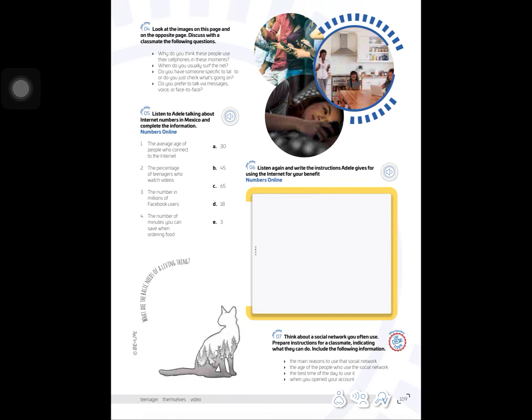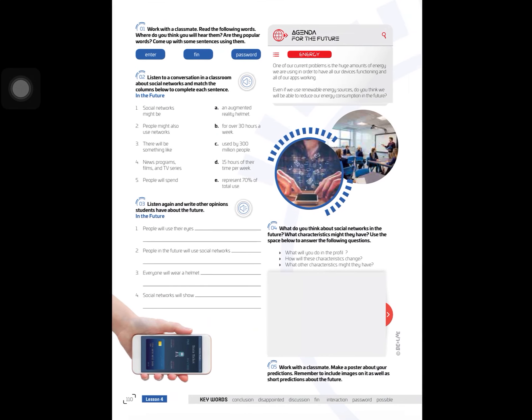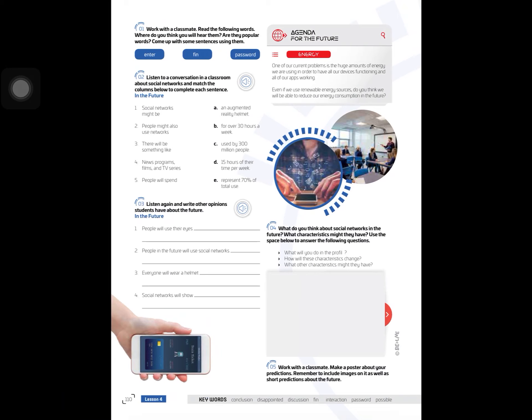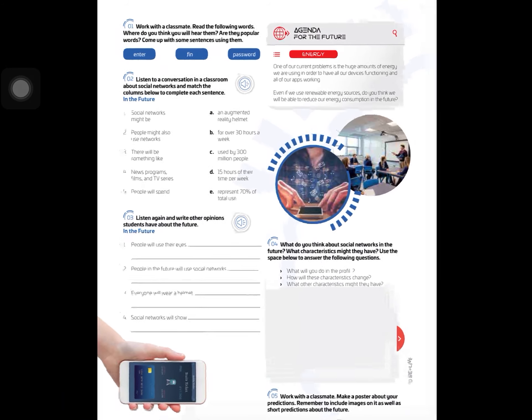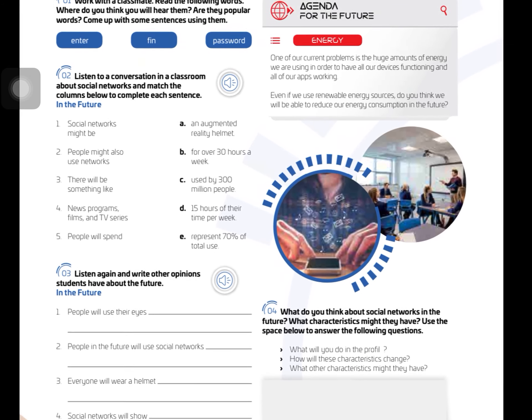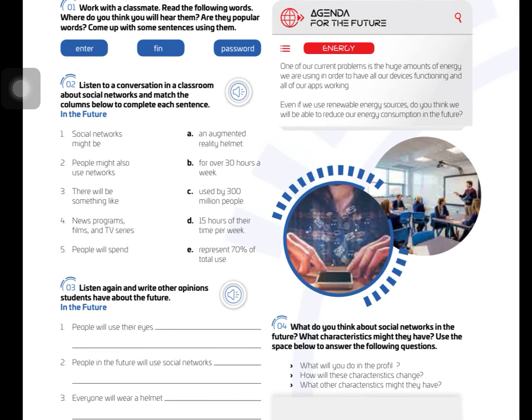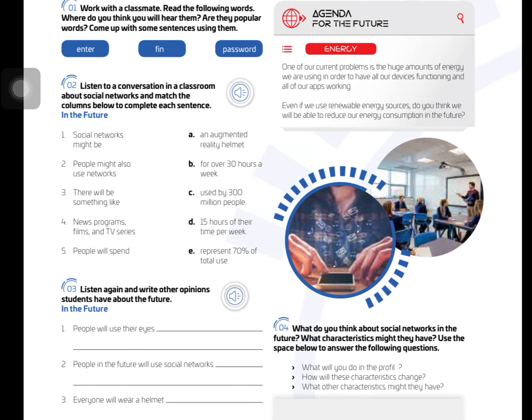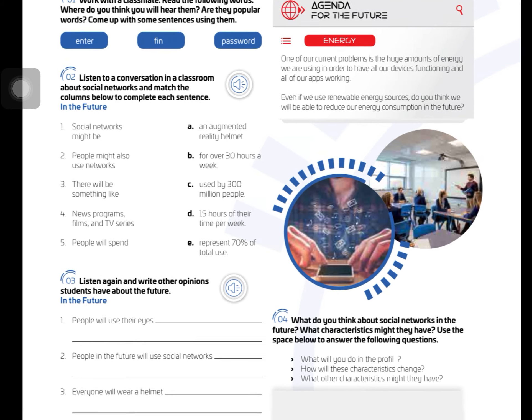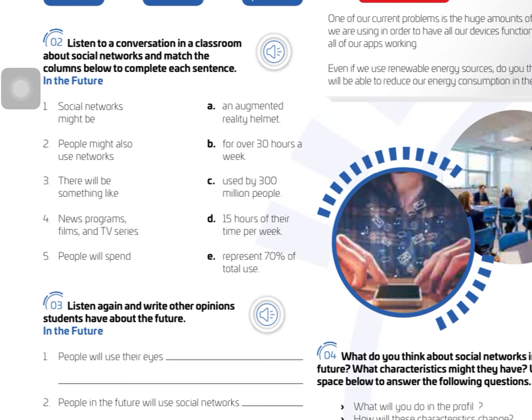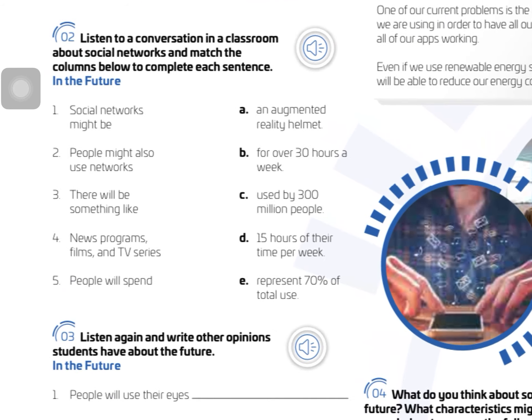Exercise 7, you don't have to do it. On the next page 110, exercise 2 — don't do exercise 1. Listen to a conversation in a classroom about social networks and match the columns below to complete each sentence.